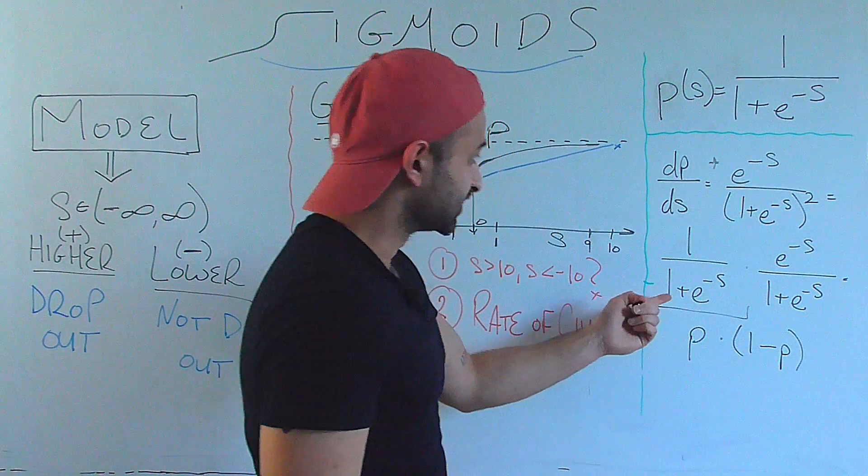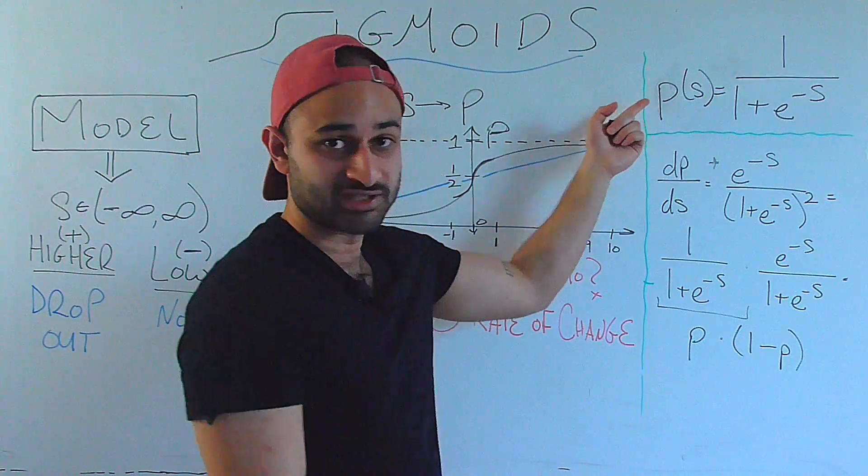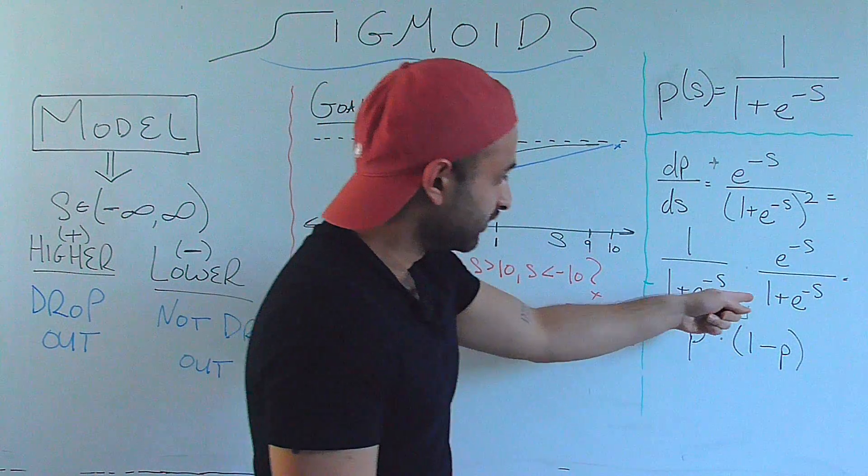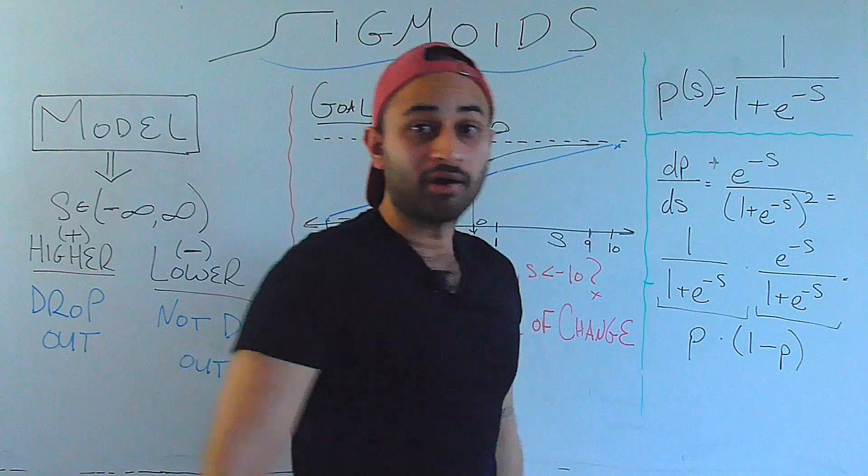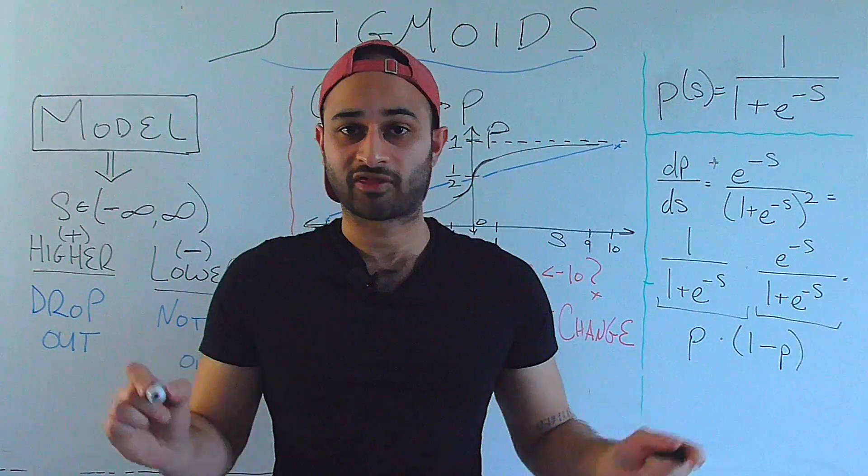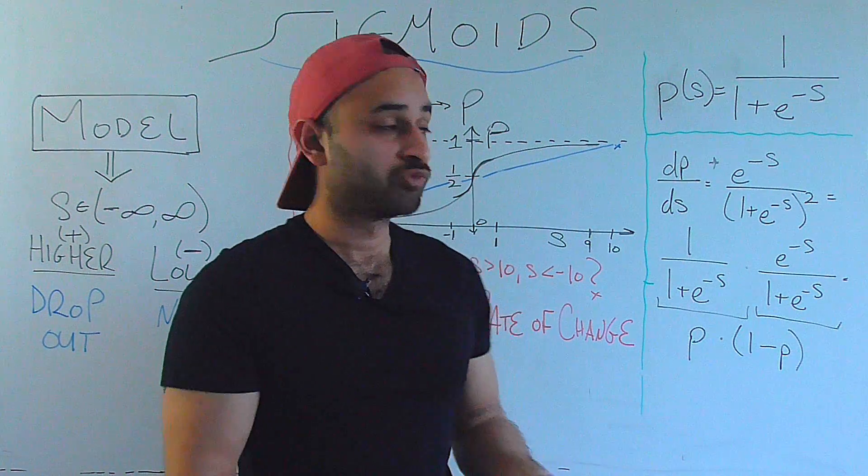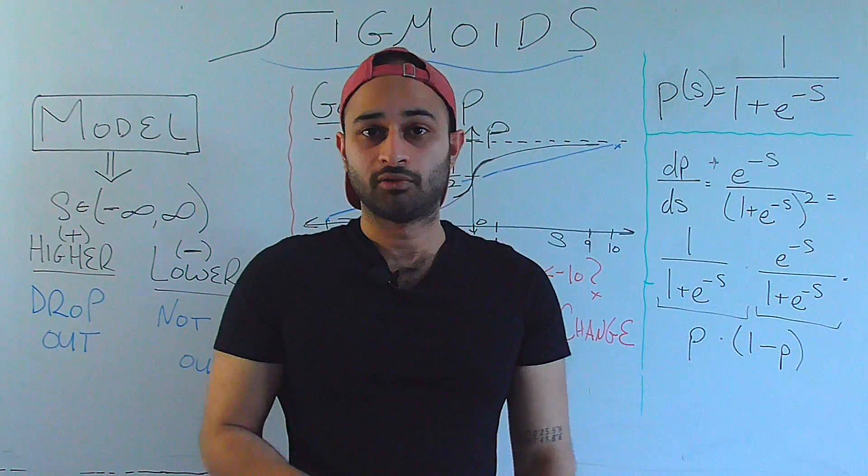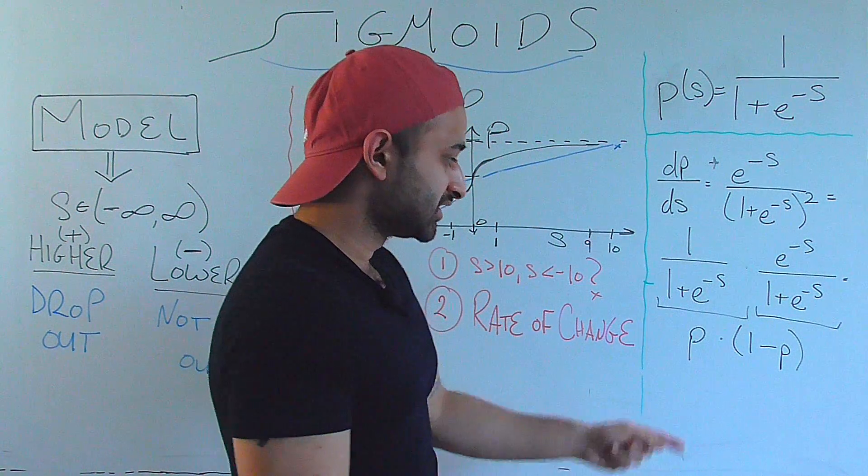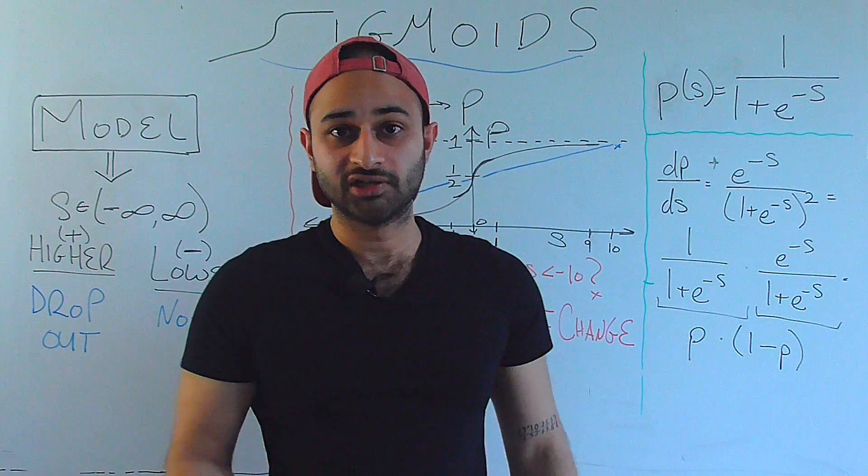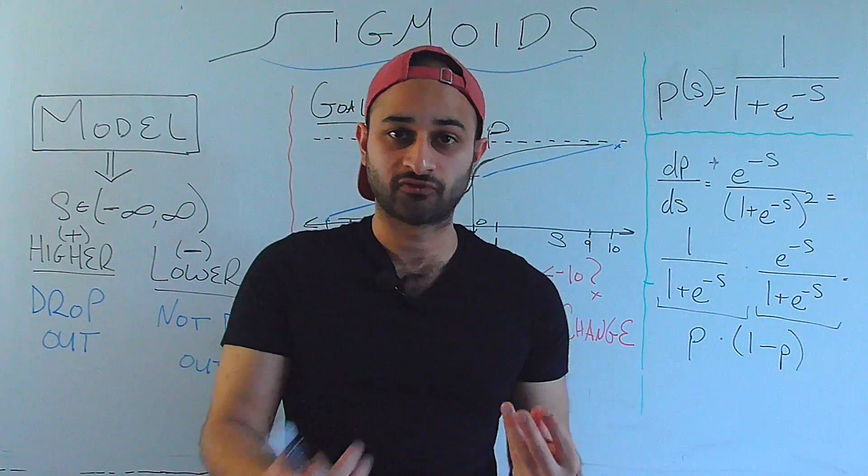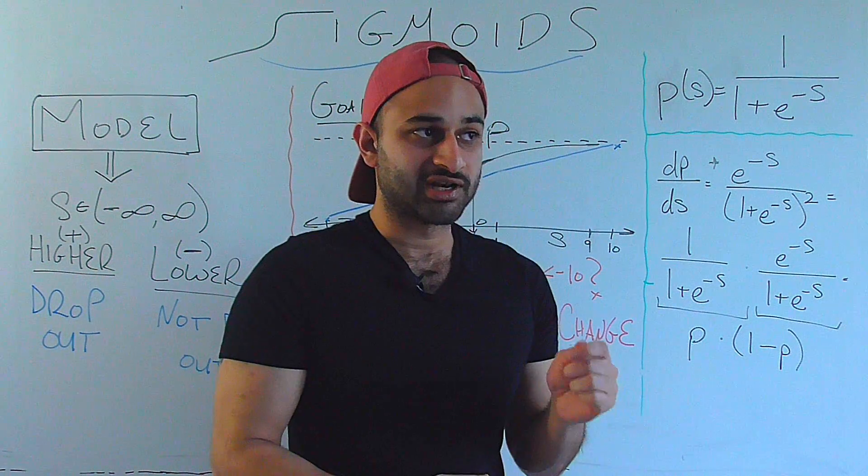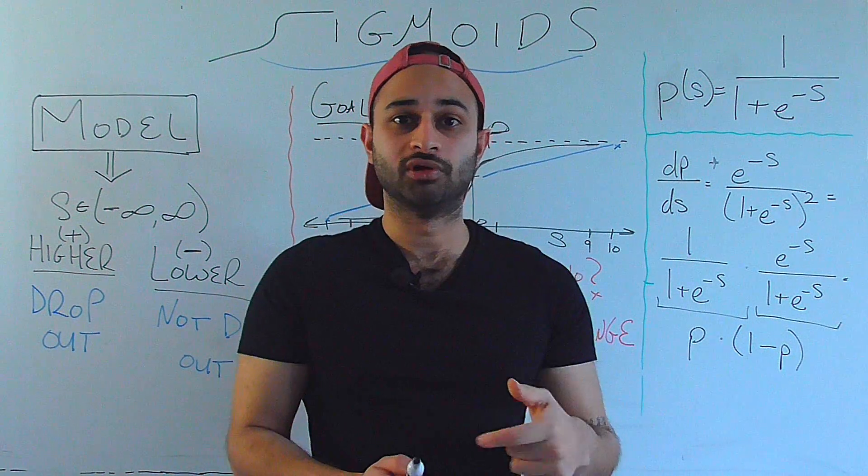The reason I did this is if you stare at this guy, this is exactly p of s itself. So that's p, and this guy is actually 1 minus p. You can do a very quick mathematical expression to check that for yourself. So what that basically says is that the derivative of the sigmoid with respect to s, the score, is actually p, the probability, times 1 minus p, which is a very nice form.